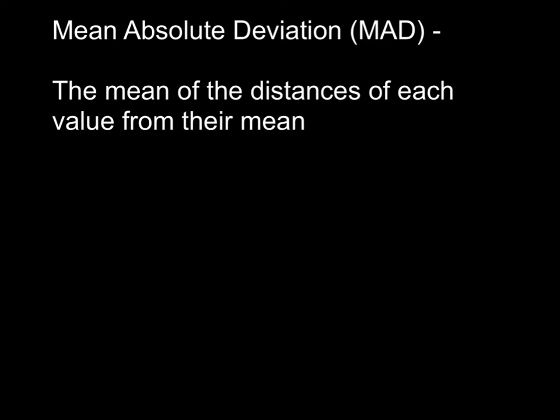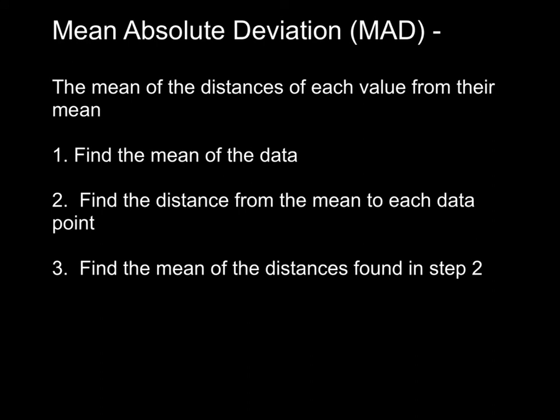Let's talk about mean absolute deviation, abbreviated as MAD — M-A-D. The definition of the mean absolute deviation is the mean of the distances of each value from their mean. The steps for finding the MAD are: step one, find the mean of your data; step two, find the distance from the mean to each data point; and finally, find the mean of those distances from step two. Let's look at an example to help us understand this process.